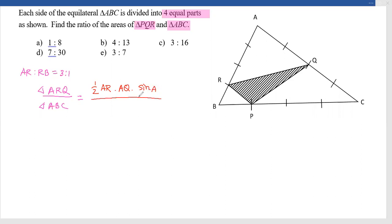The same thing we can apply for ABC also. At that time I will write half of AB into AC into sine A. And once it is written, it is nothing but AR by AB multiplied by AQ by AC.